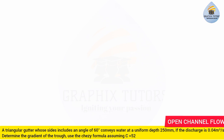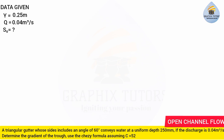As I always say, the first thing you write is your data. The depth of flow y is 250 millimeters, which converts to 0.25 meters. The discharge Q is 0.04 cubic meters per second. The bed slope S₀ is unknown. The Chezy constant C is given as 52.